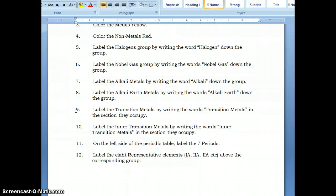Next, you are going to label the inner transition metals by writing the words inner transition metals into the section that they occupy. Those inner transition metals, remember, are your lanthanide and actinide series. Those are the two that are generally dropped down in your periodic table.